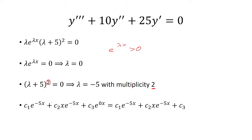Now we can combine these and form a solution. Starting with lambda equals negative 5 — because the multiplicity is 2, we have to list out two terms. The second term is going to have an x next to it, and negative 5 will be the exponent. Finally, we include lambda equals zero, so we have zero in the exponent, and e to the zero is just 1, so that's just c3. This is our general solution.